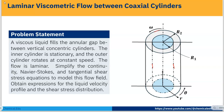The outer cylinder rotates at constant speed and the flow is laminar. We need to simplify the continuity equation, Navier-Stokes equation, and tangential shear stress equation to model this flow field and obtain expressions for the liquid velocity profile and shear stress distribution.